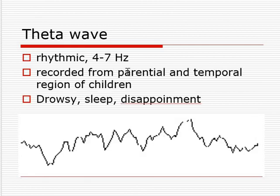The theta wave is 4 to 7 Hz. It is recorded from the parietal region, and in the case of children — small babies — it is only around 12 Hz. Finally, the delta wave is the lowest frequency waveform.